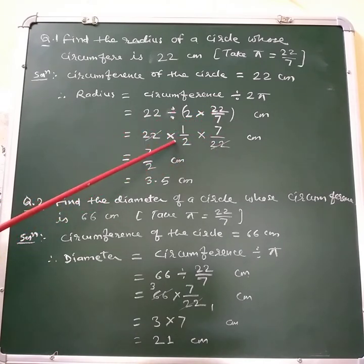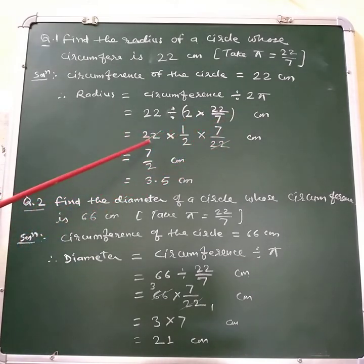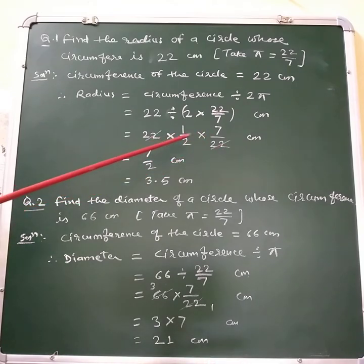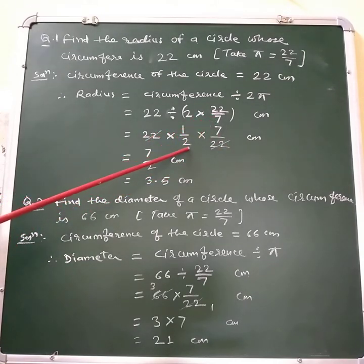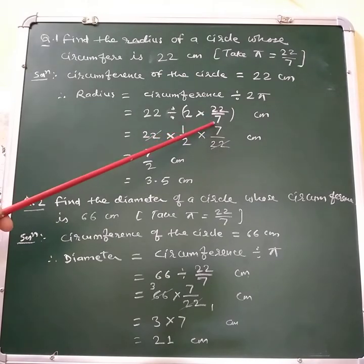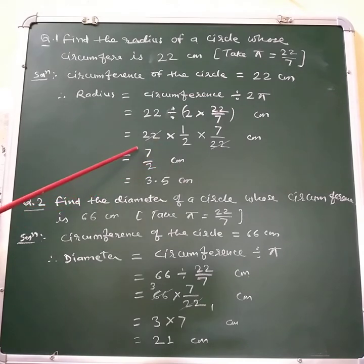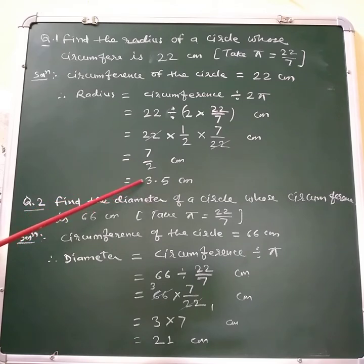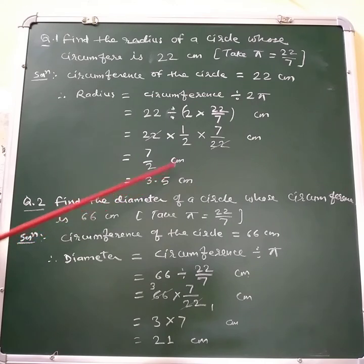So it is 22 multiplied by 1/2 multiplied by 7/22 centimeters. The 22 in the numerator and the 22 in the denominator cancel out. What remains is 1 × 7, that is 7/2. So it is 7/2 centimeters.